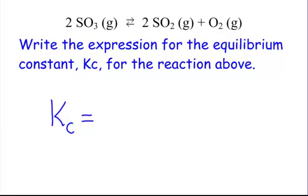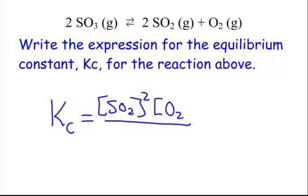Our products will go in the numerator, and we have the concentration of SO2, and we're going to do it to the second power because there are two moles of SO2. We're going to multiply it by O2, the concentration of O2, so make sure you put the brackets around it. We're going to put that to the first power because there's only one mole.